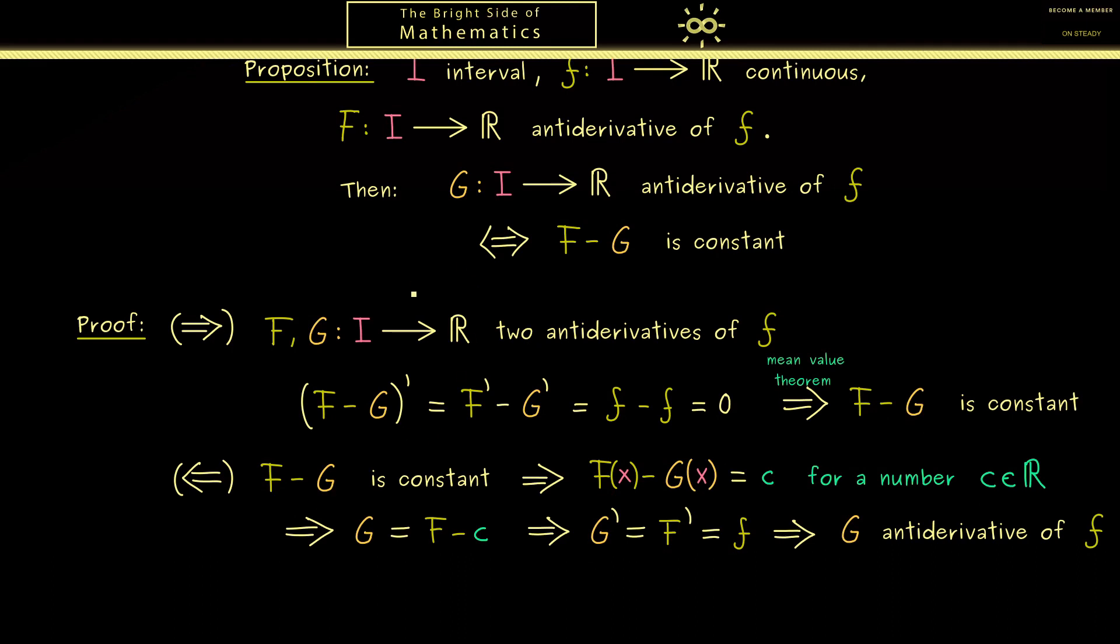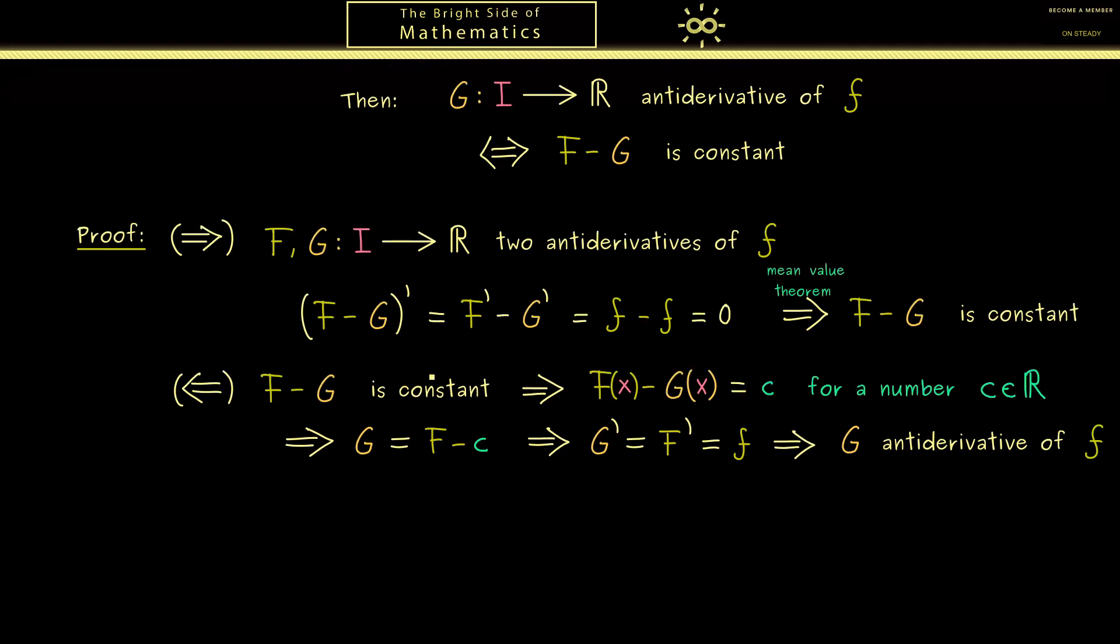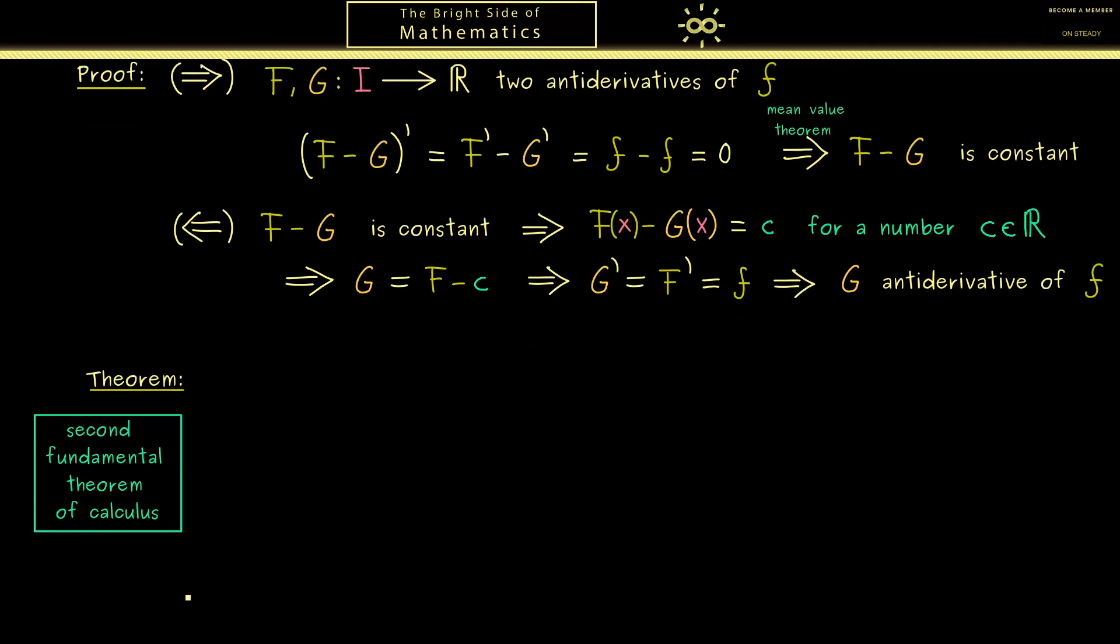And now I want to apply it immediately to the next theorem. Indeed, this will be the important second fundamental theorem of calculus. So as you can see, this should be something you really should remember. Now the assumptions here are not different from before. We still have our interval and the continuous function f. Moreover, we need an antiderivative again, and let's call it capital F of course.